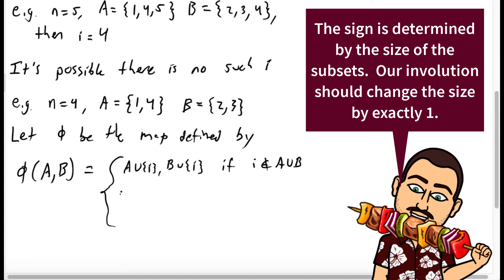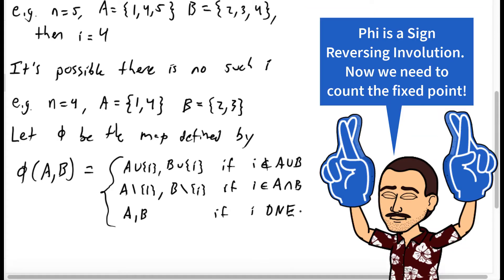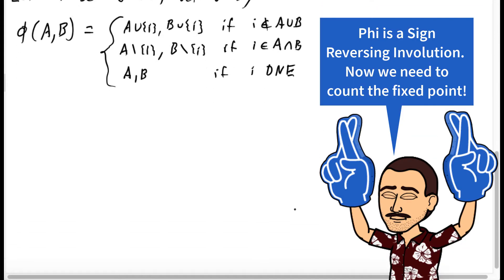And again, i is the same i as above. It maps A, B to A without i, B without i, if i was in both A and B, so if i was in the intersection. And it maps A, B to itself if there was no such i. So if i doesn't exist, like we saw in the previous example, phi of A, B would just be A, B.